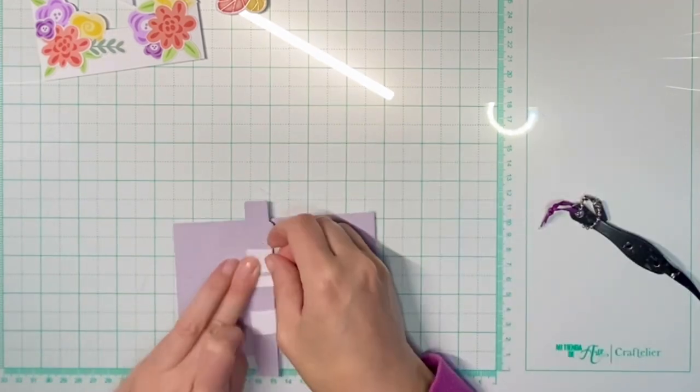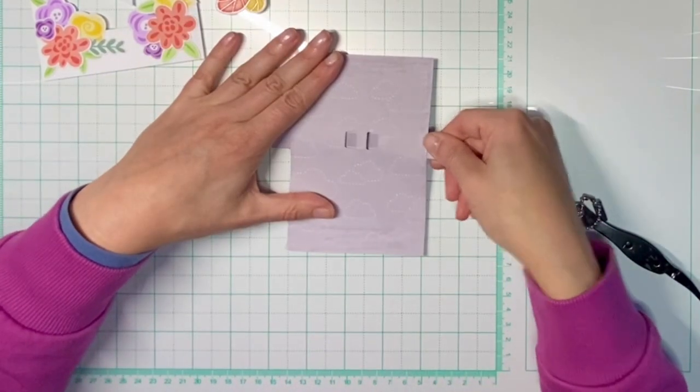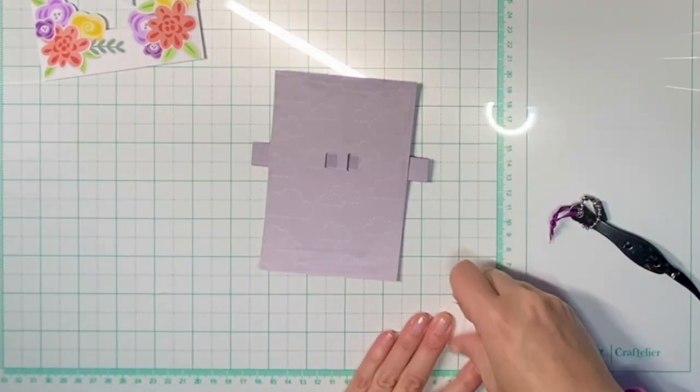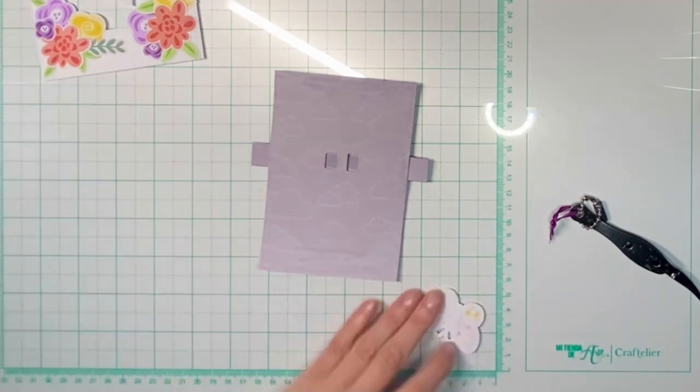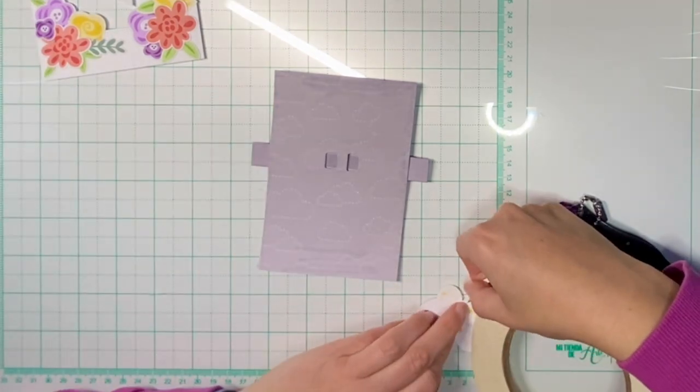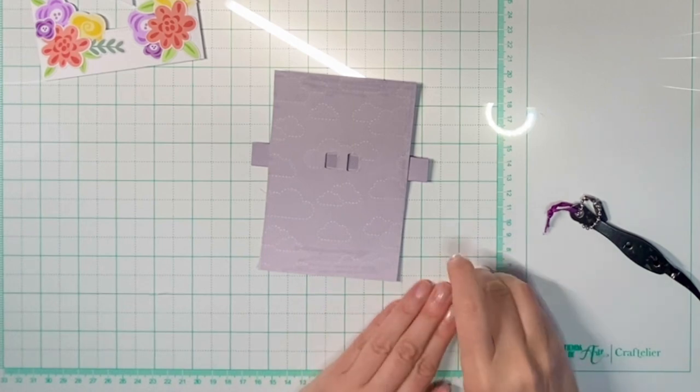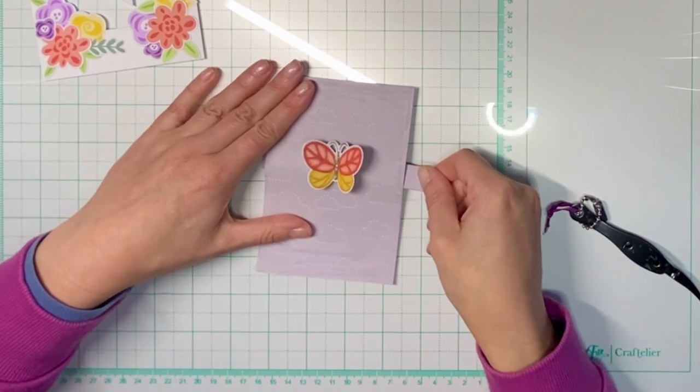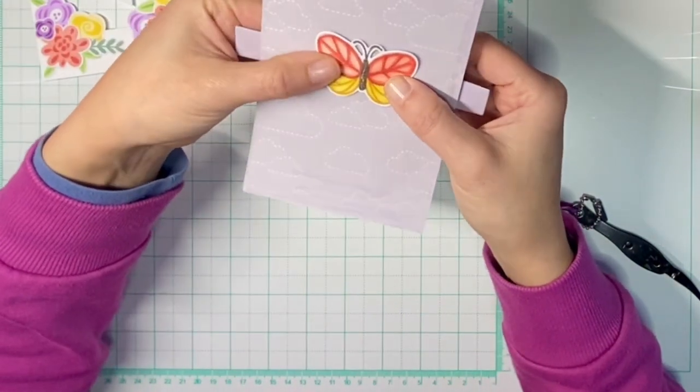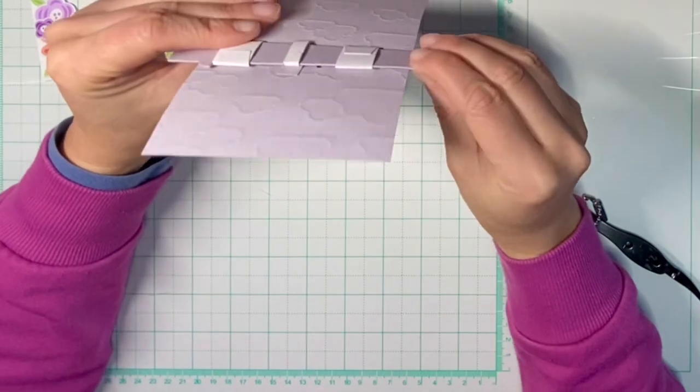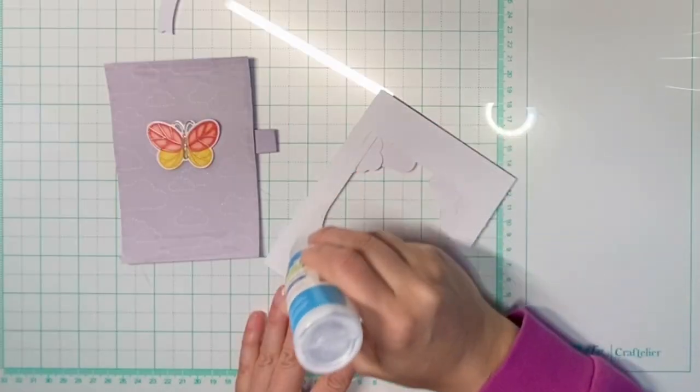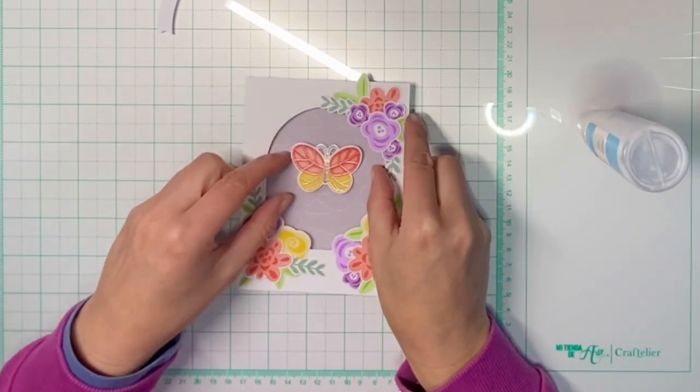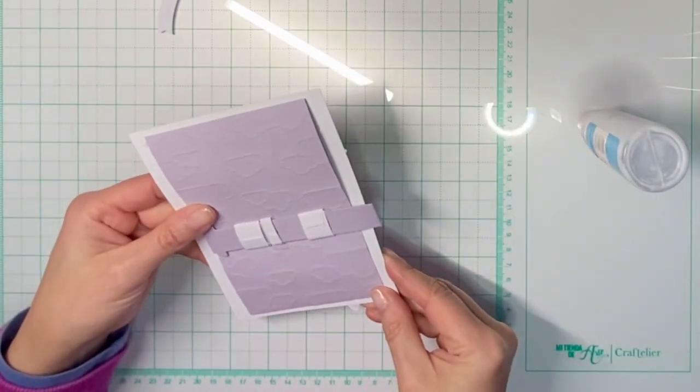So I can re-adhere my stabilizer pieces. I also adhered the third stabilizer piece, which will also function as a stopper. Now I can adhere my butterfly by using some very thin double-sided adhesive in the center. I can check if the mechanism works and if the wings will get lifted by pulling the tab. Now I'm assembling my card by adhering the front panel, making sure I don't have glue at the pull tab.